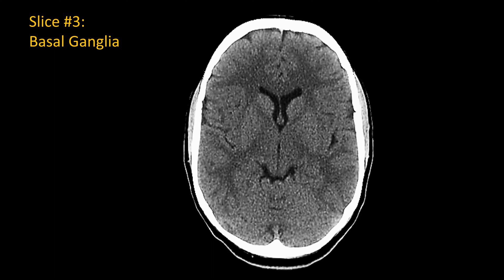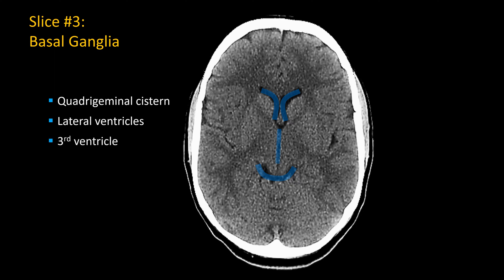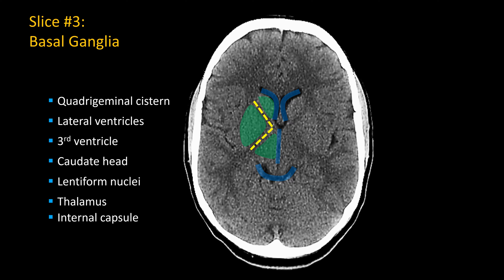One level above at the basal ganglia, you should again be able to see the smile-shaped quadrigeminal and ambient cisterns. The lateral ventricles are small and relatively symmetric. Through the front, you will see the third ventricle, which on axial view looks like a small straight line and should be right in the midline. Basal ganglia structures include the caudate head, lenticular nuclei — medially the globus pallidus, laterally the putamen — and the thalamus, all separated by the internal capsule.